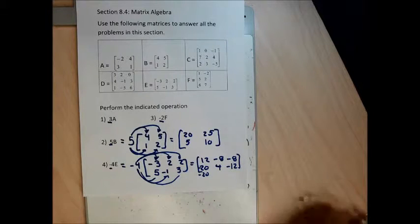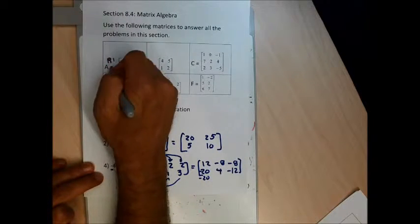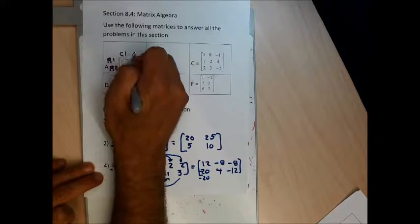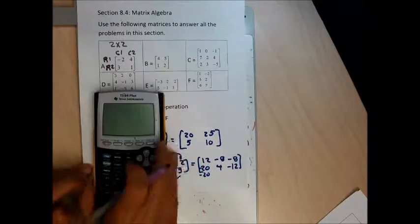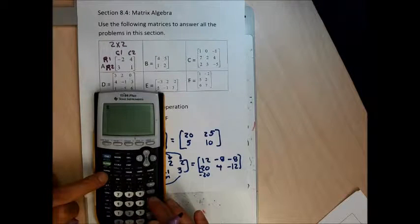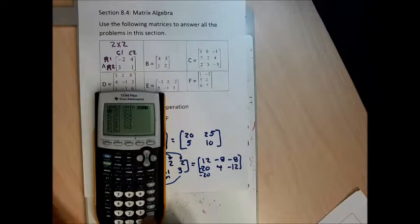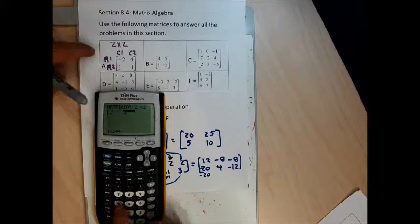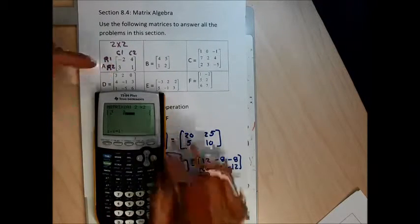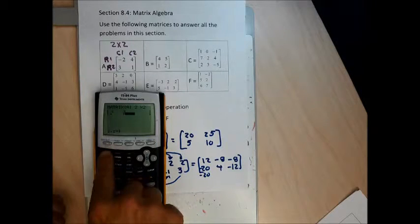There are only 24 problems in this section and they all use the same matrices, so I'm going to enter them all at once. The first matrix has two rows and two columns — a 2 by 2 matrix — and I'll call it matrix A. To get matrix A in, we go second and hit the X-inverse matrix key, arrow over to edit, and it's right on matrix A. I hit enter, type 2, enter, 2, enter, and enter the numbers negative 2, 4, 3, 1.